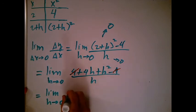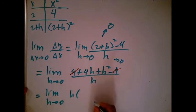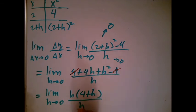I'm going to pull an h out on top, and I'm left with 4 plus h. I have an h just still on bottom, and now the h on top kills the h on bottom.